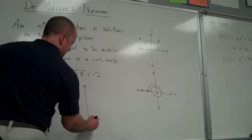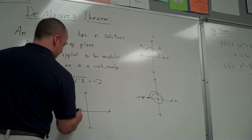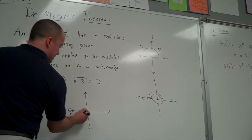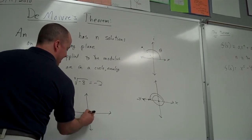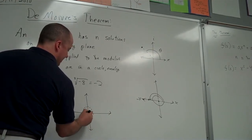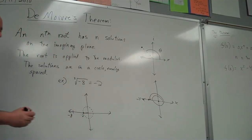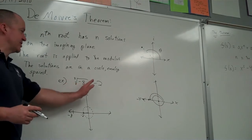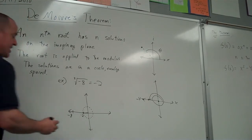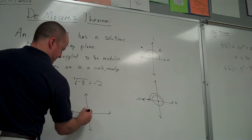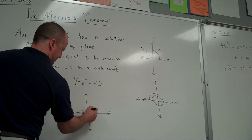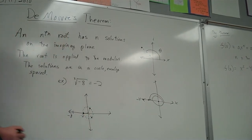Let's go to the imaginary plane and make this more complicated. There are now three solutions to it. Here's negative 8. One of those solutions is going to be the real one: negative 2. The other two solutions are going to be on this circle with a radius of 2. Negative 8 is not a solution — this number has three different roots. The other two are evenly spaced on this circle away from this solution.